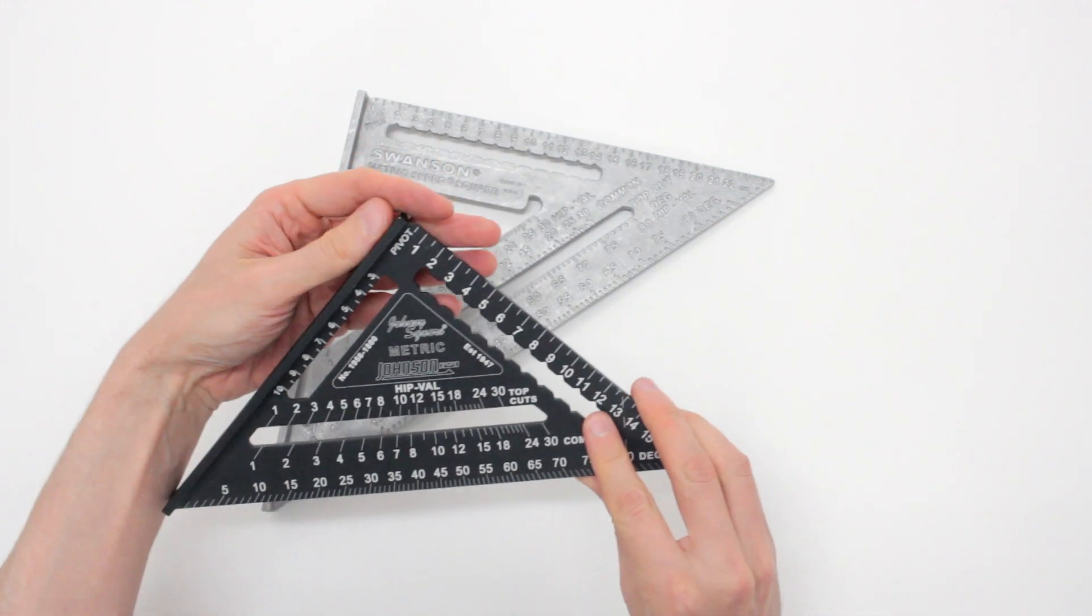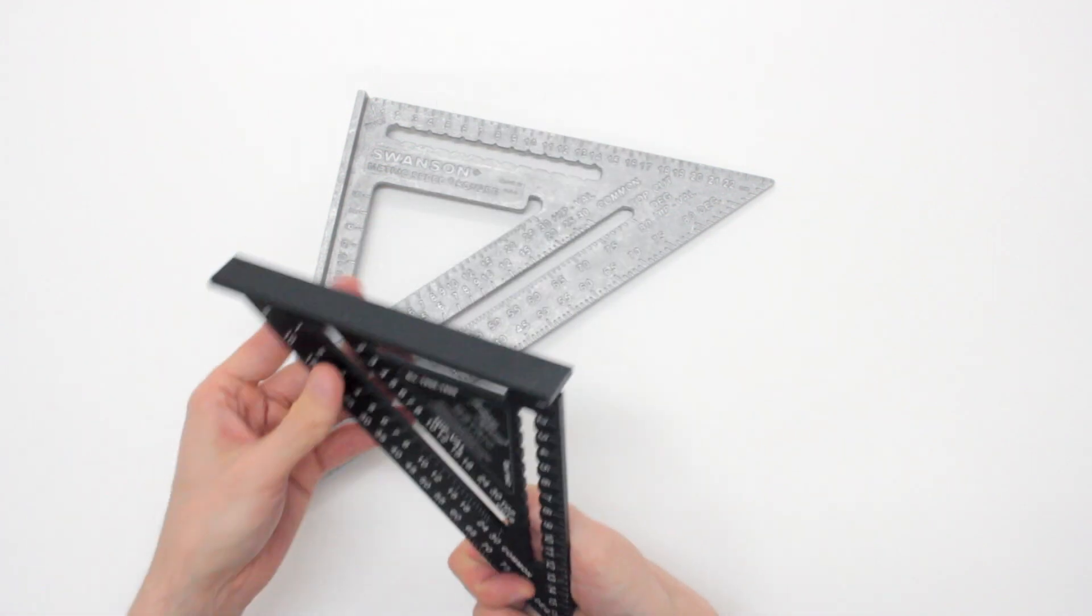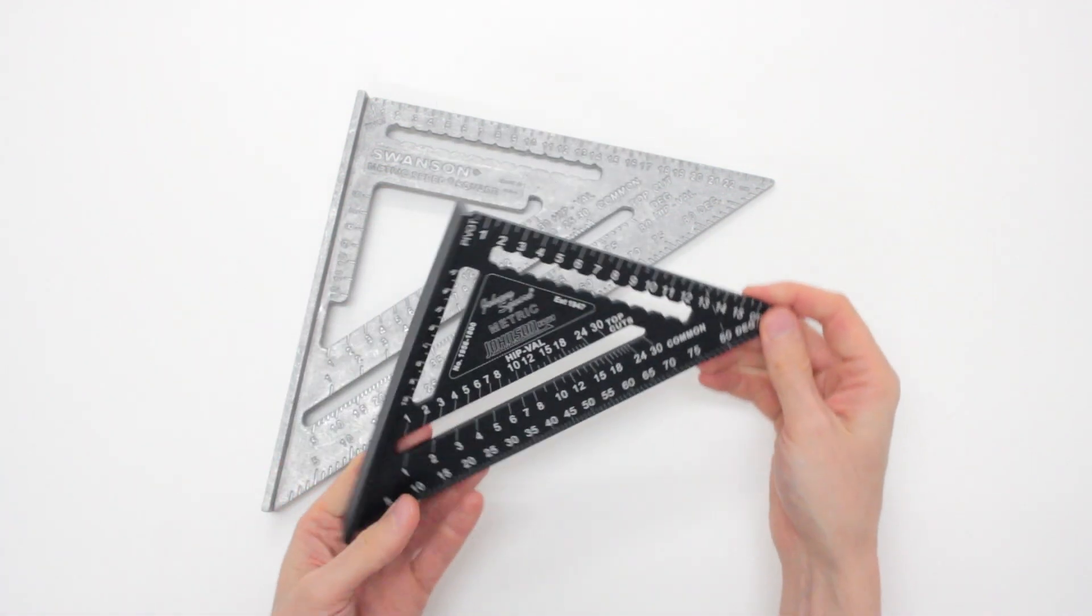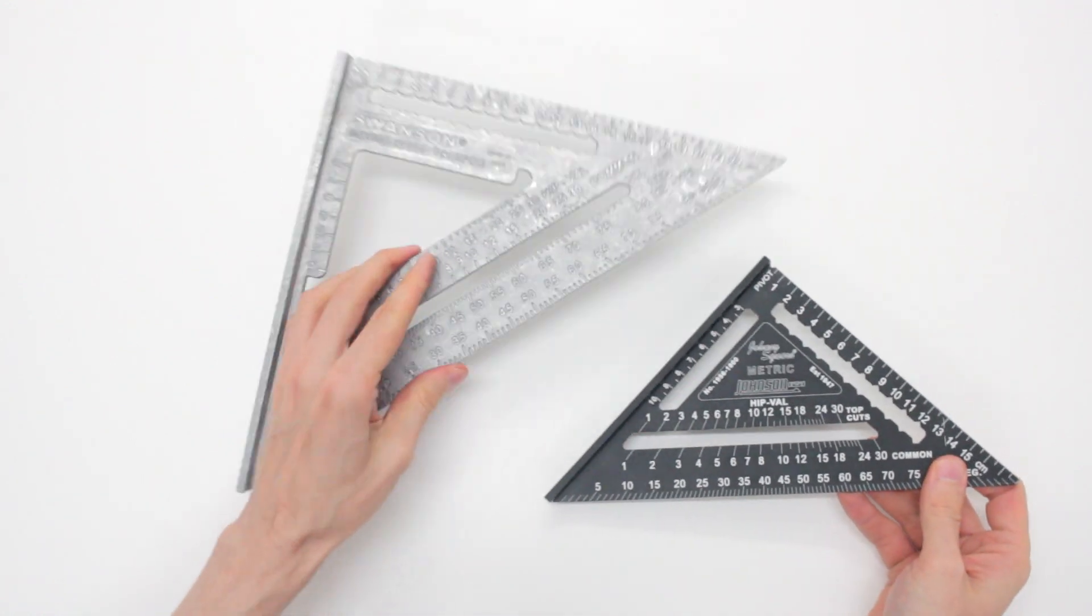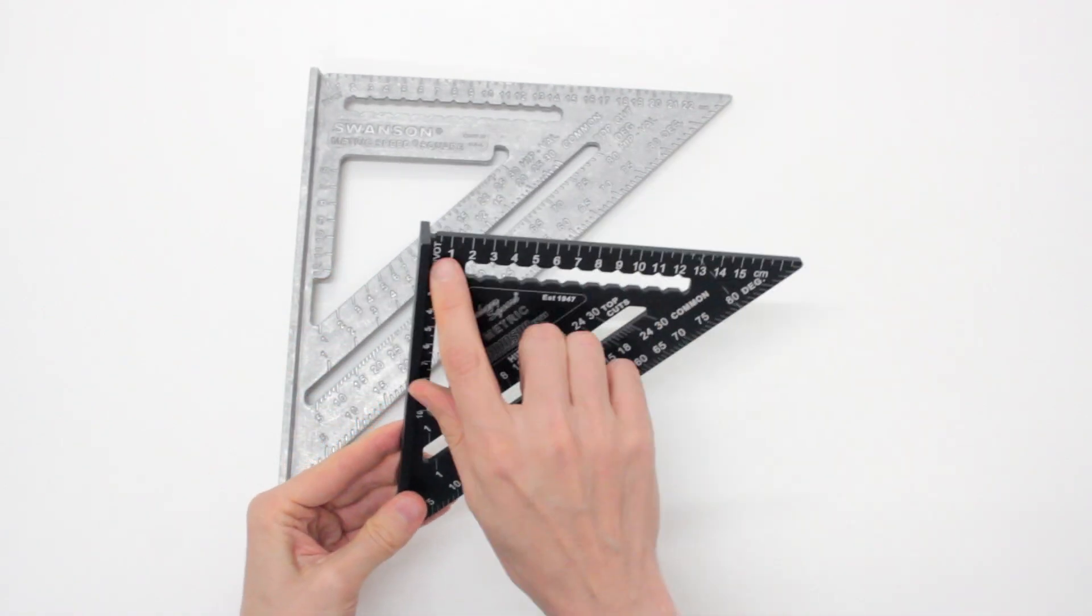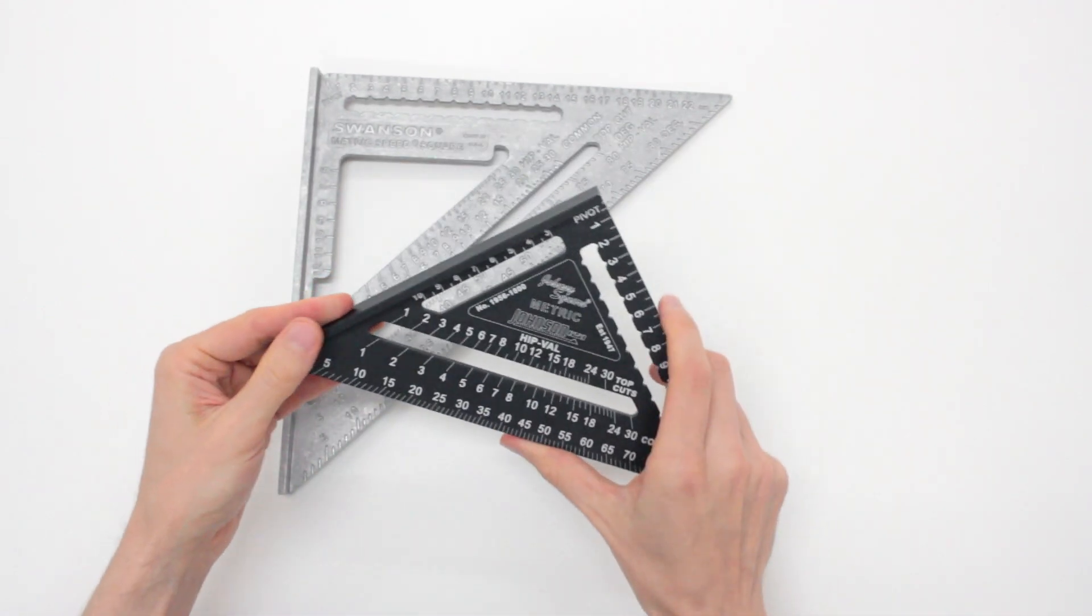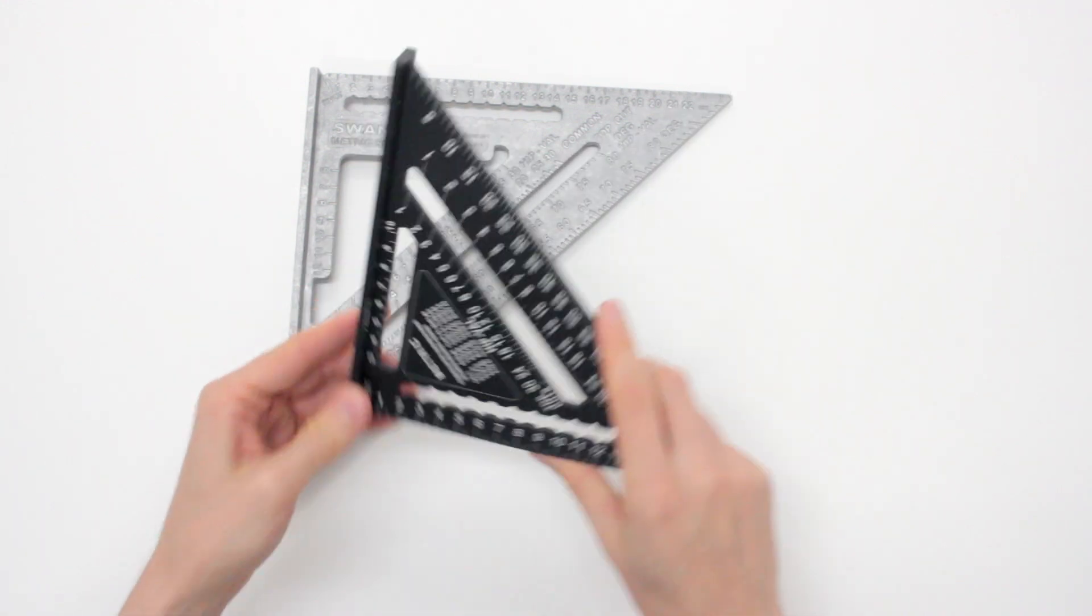The Johnson metric speed square is exactly the same size as the original Swanson's 7-inch. So, this one is 7-inch and this one is nice to carry around.